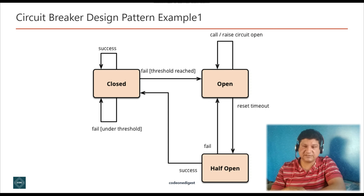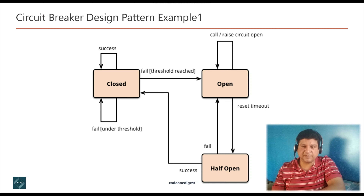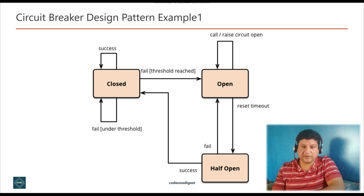The proxy can be implemented as a state machine that mimics the functionality of an electrical circuit breaker. Closed state: if a service is responding successfully, the circuit breaker will be in closed state. Open state: if the service is out of order, the circuit breaker will be in open state and will not send any requests to the failed service. Half-open state: the circuit breaker will send a few requests after timeout and validate the response. If the response is successful, the circuit breaker will be closed and normal operation will continue. If the response is not successful, the circuit breaker will go again into open state and start the timer again.